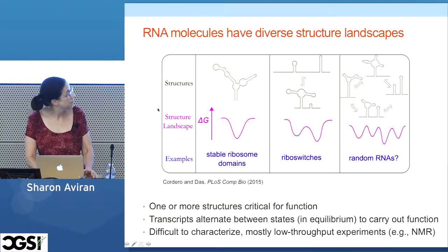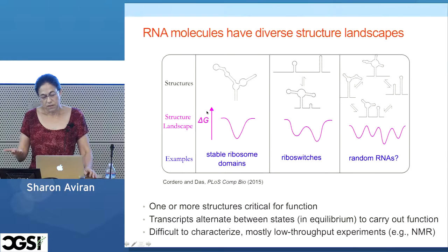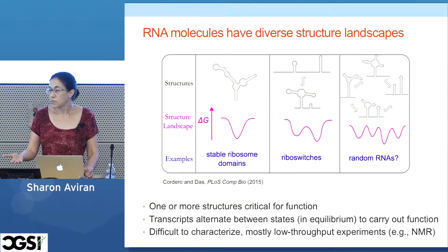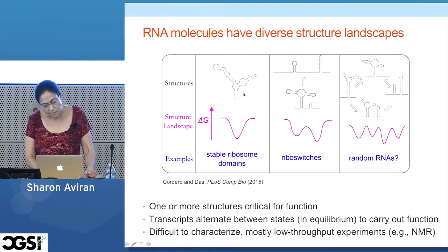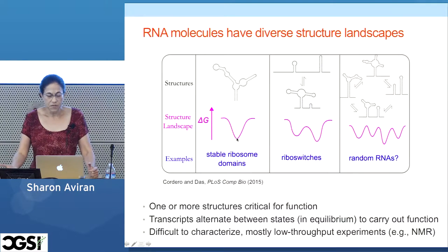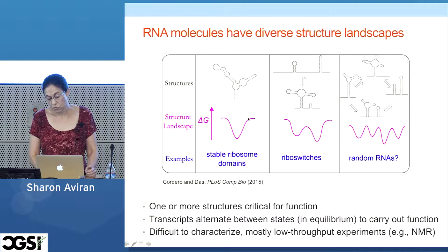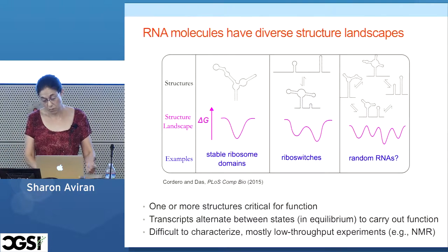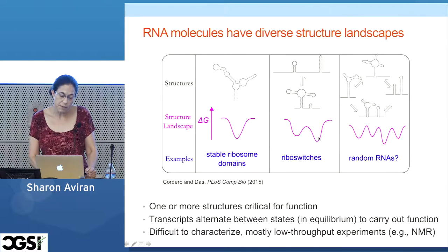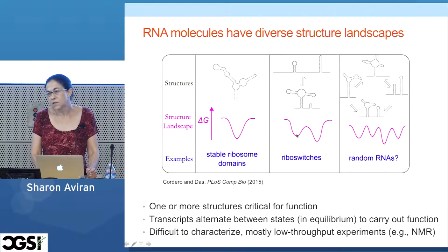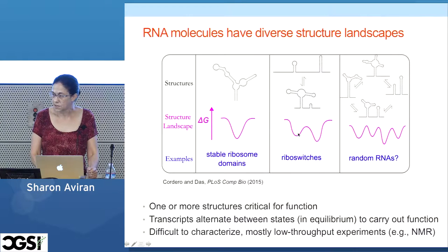Conceptually, we look at these as energy landscape curves where the height represents free energy — the lower it is, the more stable the structure, and the more frequently you'll see it. For a simple MFE structure you have one minimum and most molecules cluster there. But in cases with multiple local minima, you expect to see subpopulations of each: a bigger subpopulation for the more stable structure, but you will see both. We call this the Boltzmann ensemble or Boltzmann distribution of structures, which is something we would like to characterize.